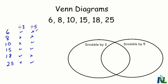The number six is divisible by three, but it is not divisible by five, so it's going to go into this section of the Venn diagram. The number eight is not divisible by three and not divisible by five, so it is going to go on the outside of my Venn diagram. The number ten is not divisible by three, but it is divisible by five, so it is going to go into this section of my Venn diagram.